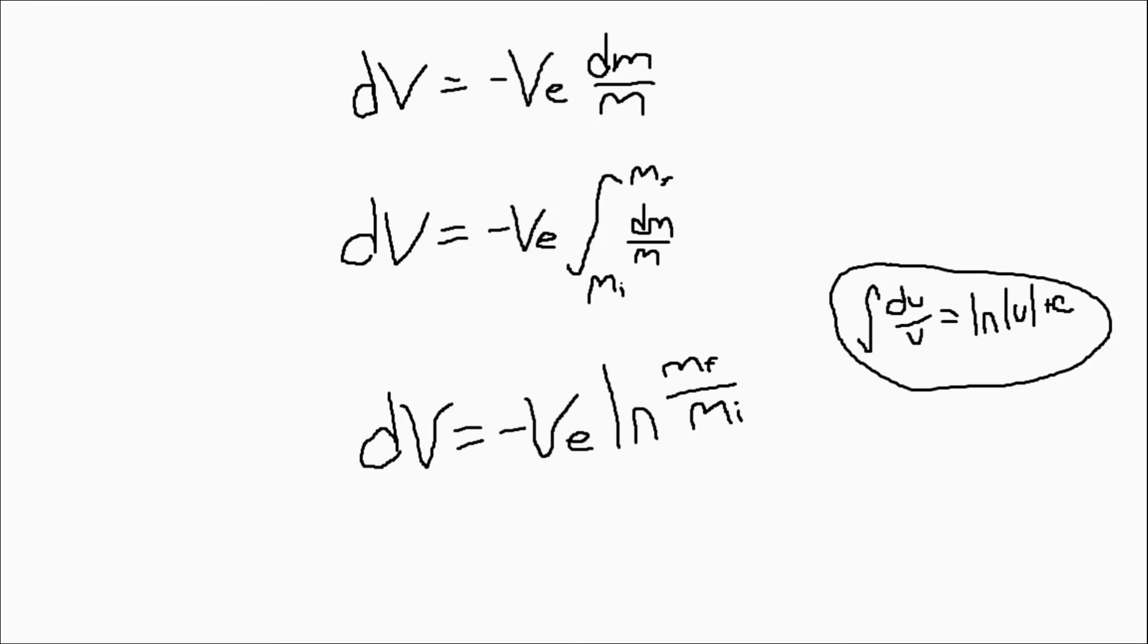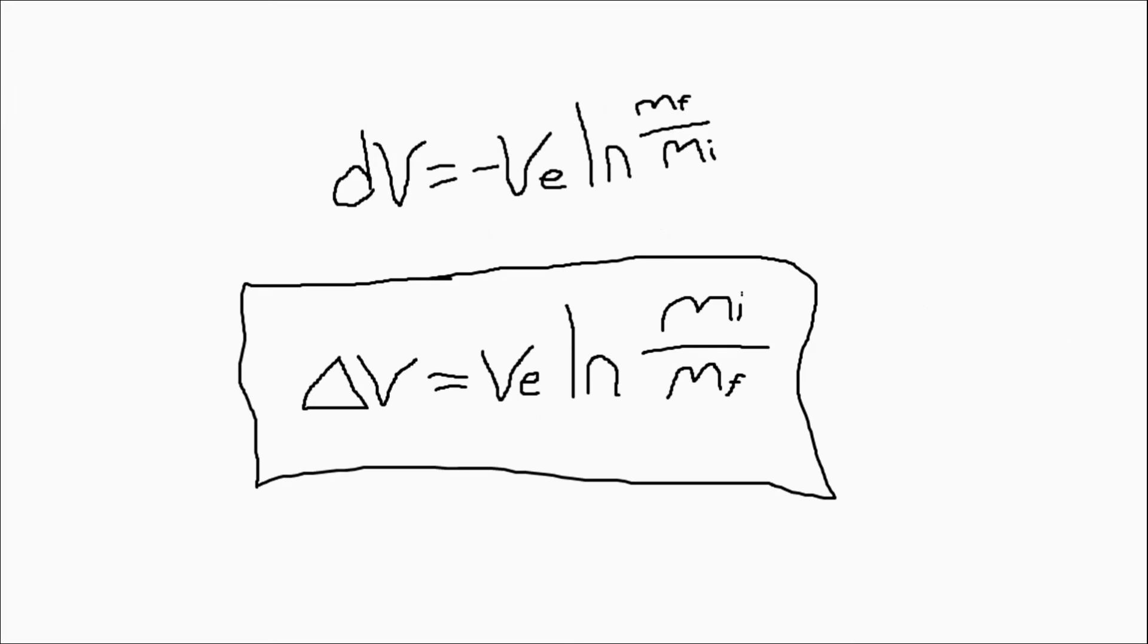So, if we just take the reciprocal of the argument of the natural logarithm, we're left with a statement that says the delta V of a rocket is equal to the velocity of the exhaust multiplied by the natural log of the ratio of the initial mass of the rocket over the final mass of the rocket.